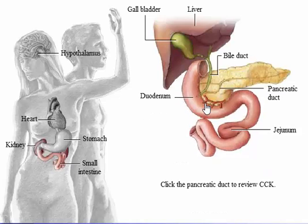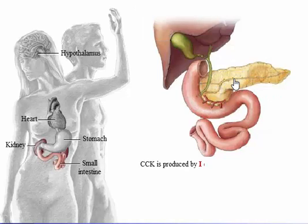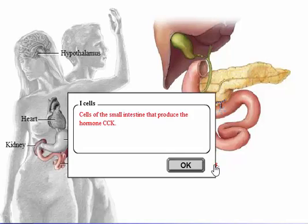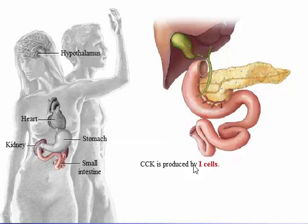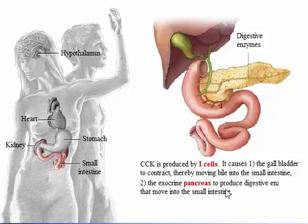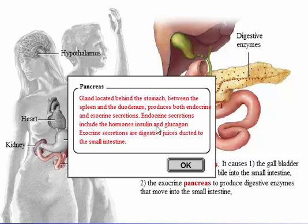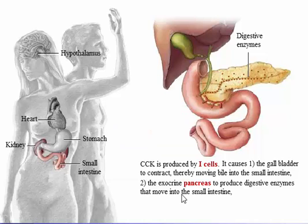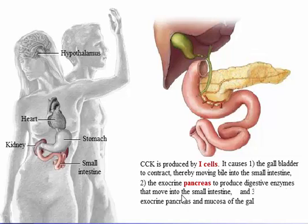CCK is produced by I cells. It causes the gallbladder to contract, thereby moving bile into the small intestine. It also stimulates the exocrine pancreas to produce digestive enzymes that move into the small intestine, and promotes growth of the exocrine pancreas and mucosa of the gallbladder.